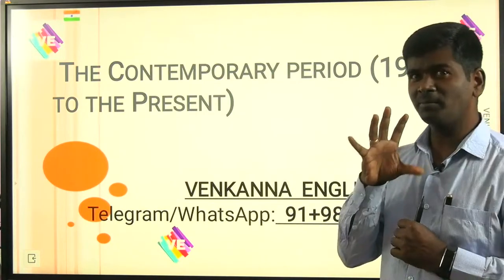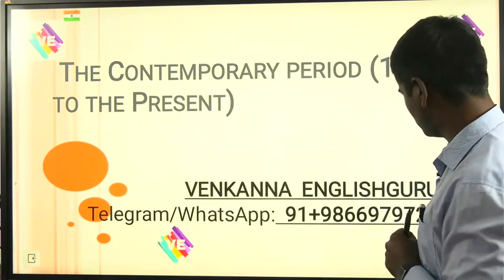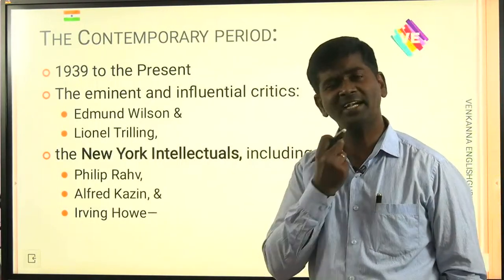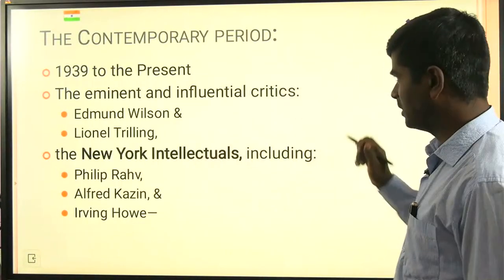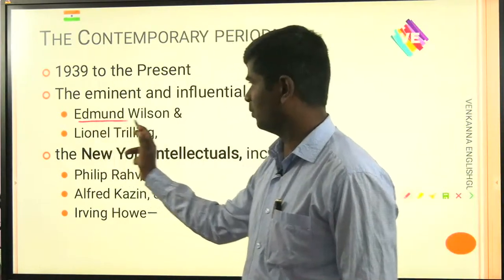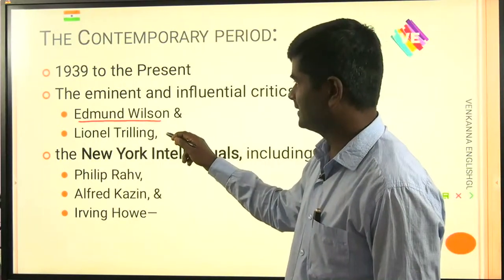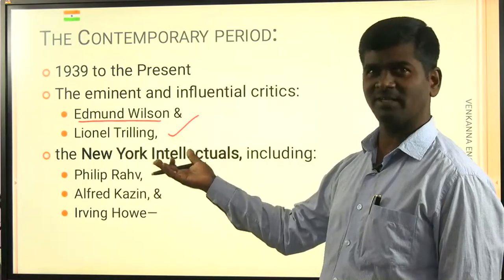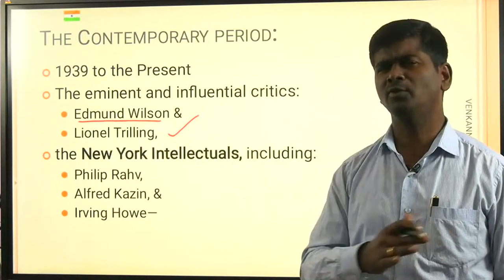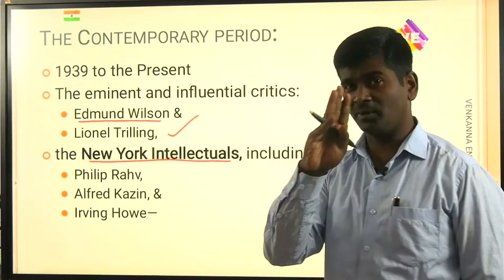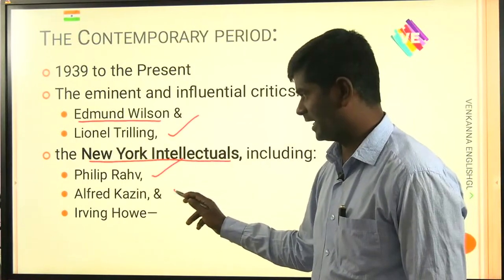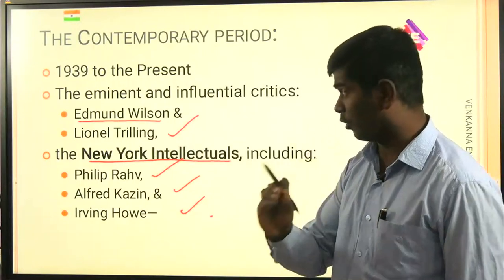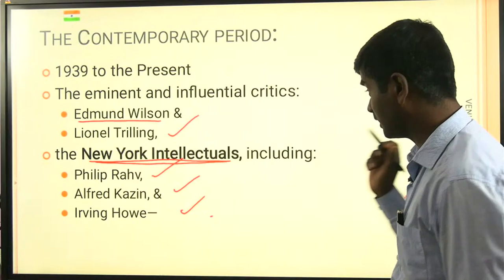In this video, we are going to talk about the contemporary period of American literature, which begins from 1939 to the present. The popular critics of American literature during this period were Edmund Wilson and Lionel Trilling — very popular writers, comparable to T.S. Eliot and F.R. Leavis. During this period, there was a popular group called the New York Intellectuals, which included three popular writers: Phillips, Rahv, Alfred Kazin, and Irving Howe.